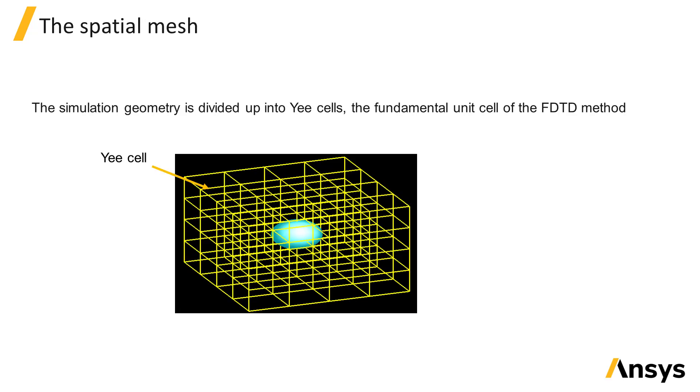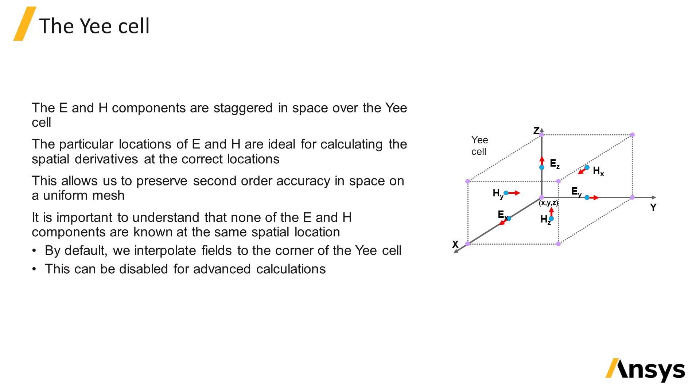The simulation geometry is discretized into Yee cells, which, as mentioned previously, are the fundamental unit of the FDTD method. The E and H field components are all located at different positions within the Yee cell. This allows us to calculate spatial derivatives by finite differences at the optimal spatial locations and gives us second order accuracy in space on a uniform mesh.